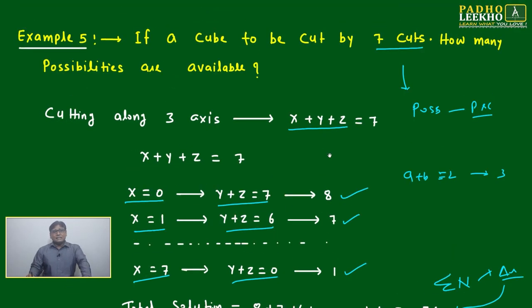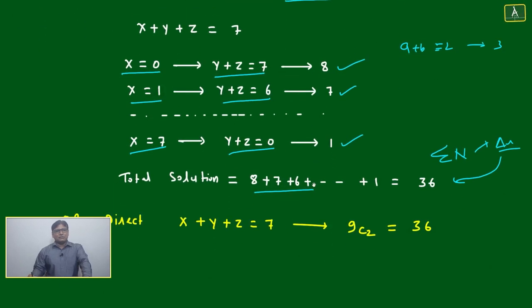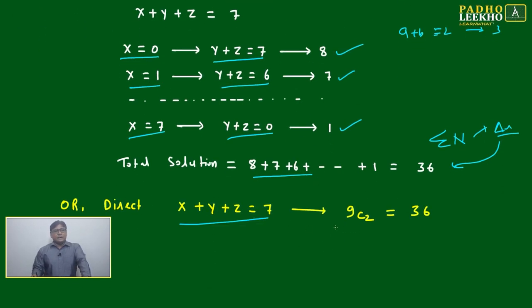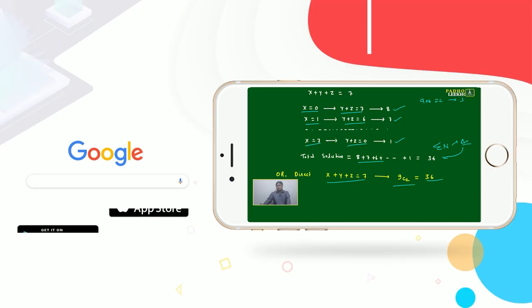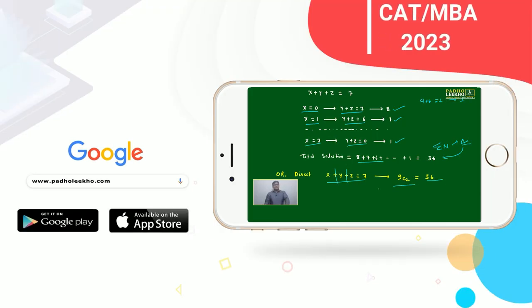We have total 36 possibilities if someone is allowed to cut maximum by 7 cuts. How can we say this directly? You're now knowing: 7 cuts, 7 plus 2 equals 9, so 9 C 2.